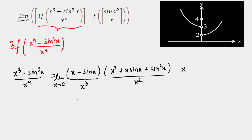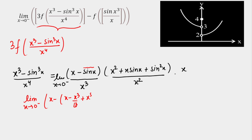Now I am going to apply the limit as x approaches 0 negative — I just want to check the tendency. Applying the Taylor expansion of sin(x), we get x minus (x - x³/3! + x⁵/5! + ...). We do not need more than power 3 because we are dividing by x³. Dividing the second factor by x², we get 1 + sin(x)/x + sin²(x)/x², the whole multiplied by x.